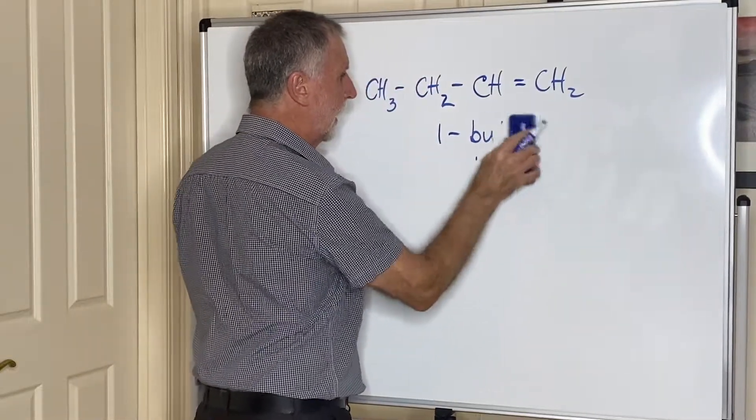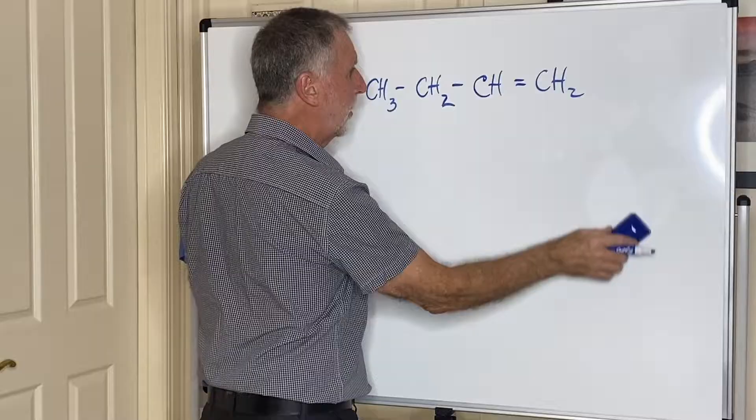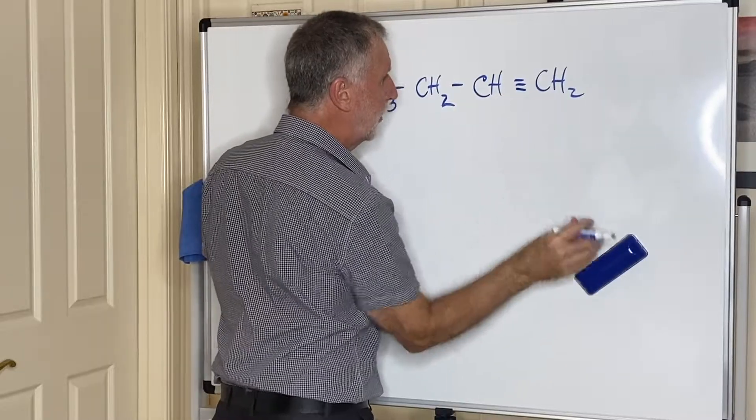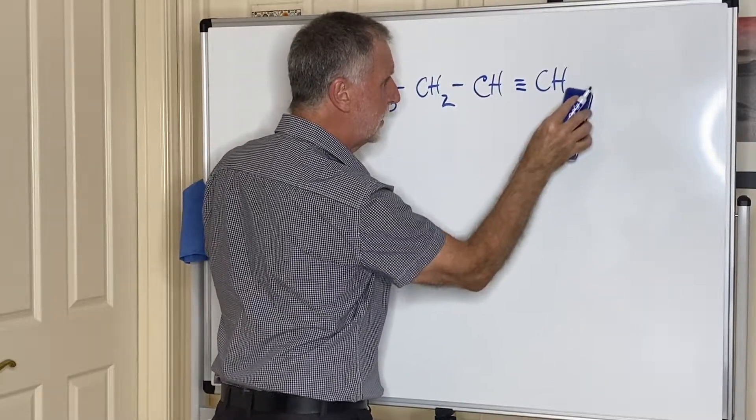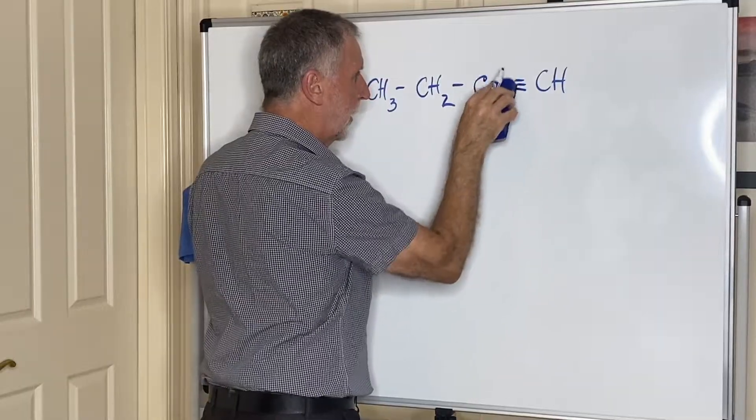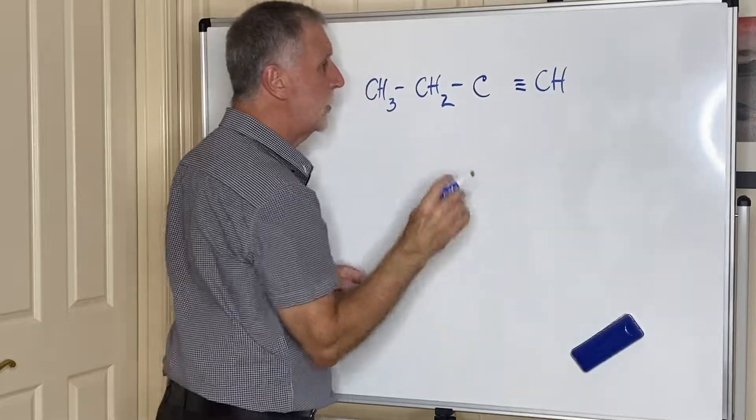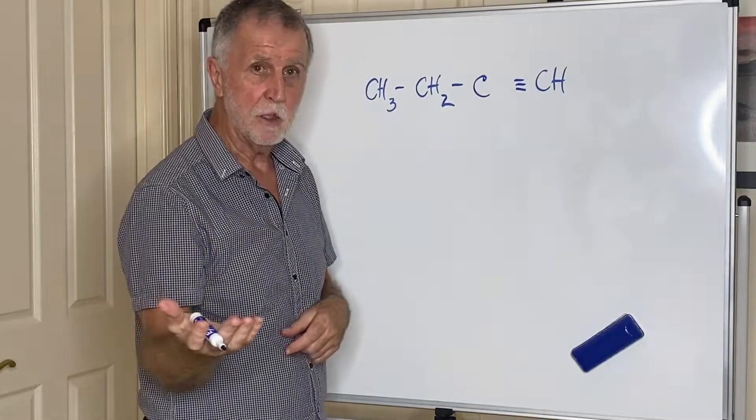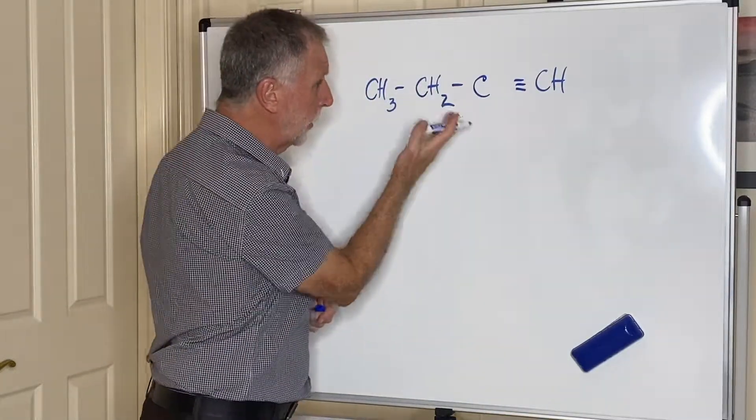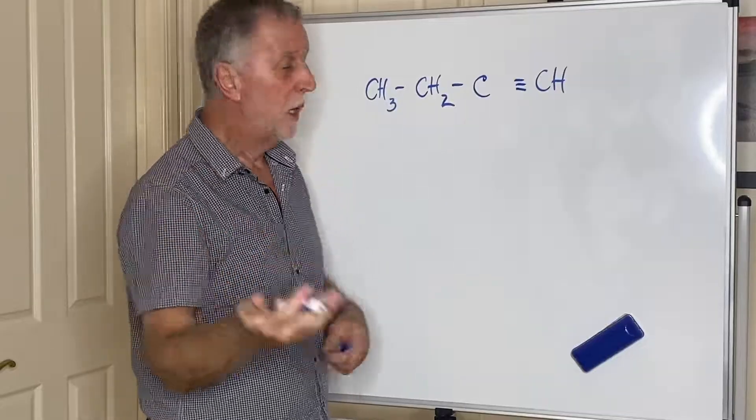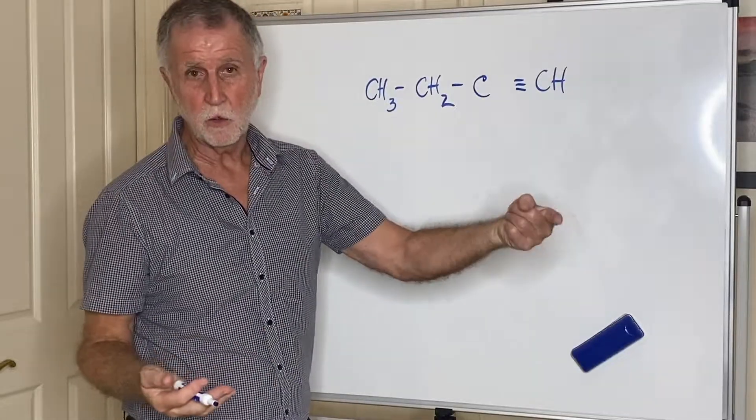If on the other hand you put a triple bond in, you would have to take off two hydrogens otherwise carbon is going to have too many bonds. The triple bond turns this into an alkyne, and just like we had a moment ago, but-1-ene, this would be but-1-yne or 1-butyne.